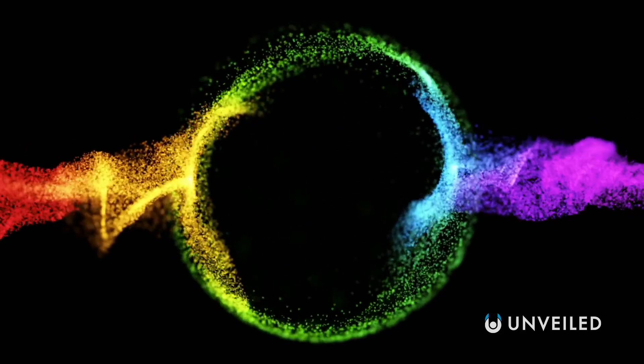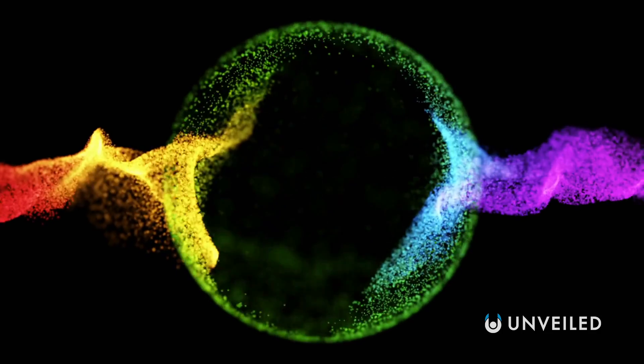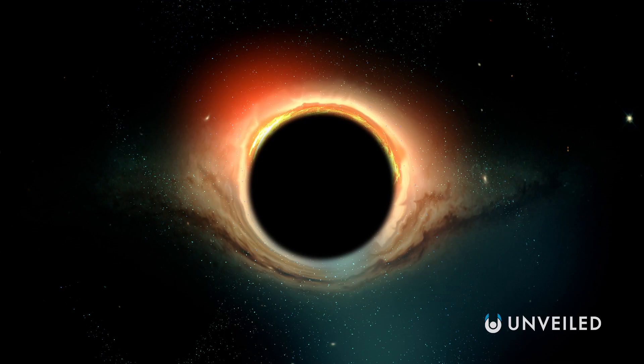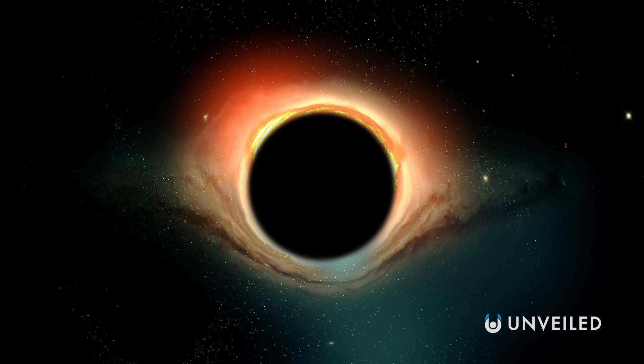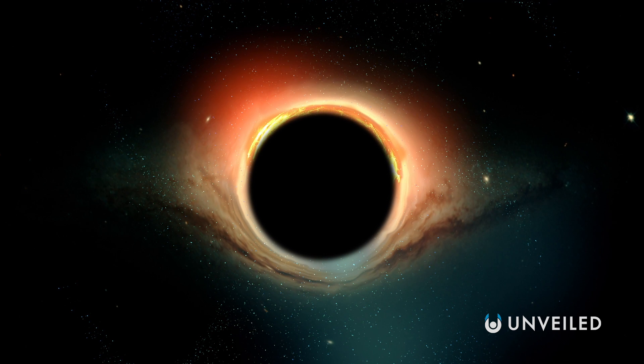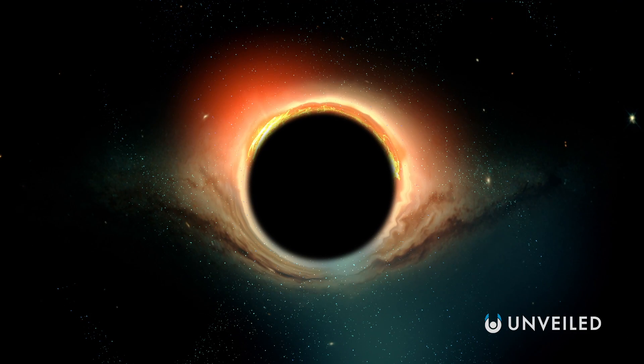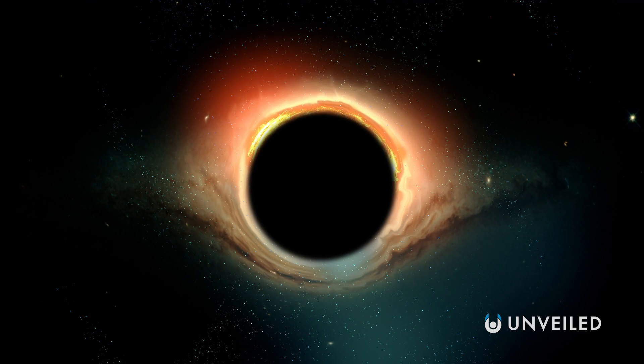A spherical universe ends in something called a big crunch, where all matter begins to be pulled in on itself and pulverized in a reverse Big Bang. Although this isn't the widely accepted view of the shape of the universe, recent research points to this being the case.